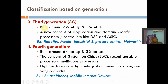Coming to third generation, here we have 32-bit microprocessors and 16-bit microcontrollers along with DSPs and ASICs also available. In third generation, we have DSPs and ASICs along with microprocessors and microcontrollers. Third generation embedded systems are used in robotics, media, industrial and control networks, process control, and networking. ASICs stands for application-specific integrated circuits.